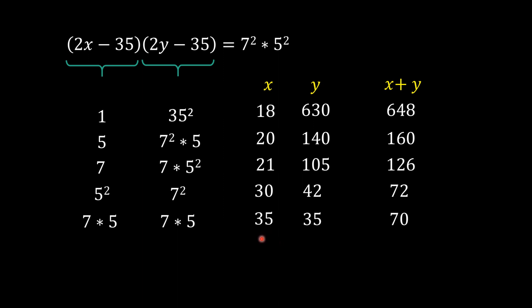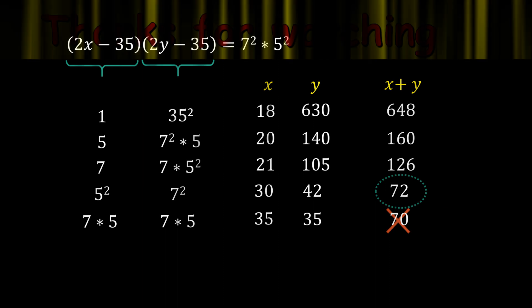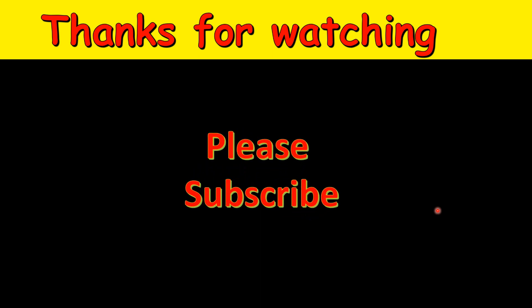Since x and y must be different positive integers, we exclude the case where both equal 35 (x equals y equals 35). Among all remaining valid cases, the smallest value of x plus y is 72, so our answer is 72. I hope you enjoyed this problem — it's a tough one, so it's okay if you couldn't solve it on the first attempt. If you want more such problems, please subscribe to the channel. Thanks for watching.